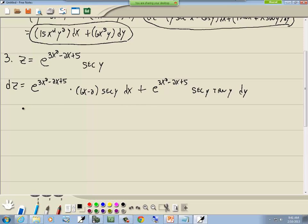We could factor out what they have in common. They both have an e to the 3x squared minus 2x plus 5 and they both have a secant y. Personally, I like to leave it in this form because then the dx is all in one grouping and the dy is all in one grouping. So we've got e to the 3x squared minus 2x plus 5 secant y times 6x minus 2 dx plus tangent y dy.